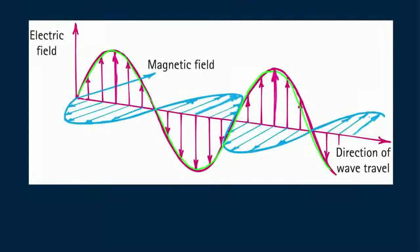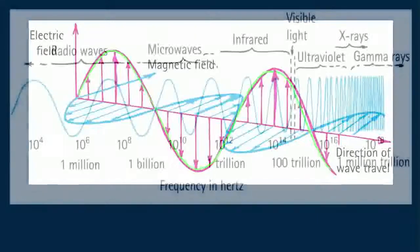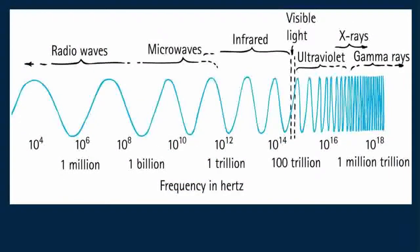In a vacuum, all electromagnetic waves move at the same speed and differ from one another in their frequency and wavelength. Their classification according to frequency is the electromagnetic spectrum.